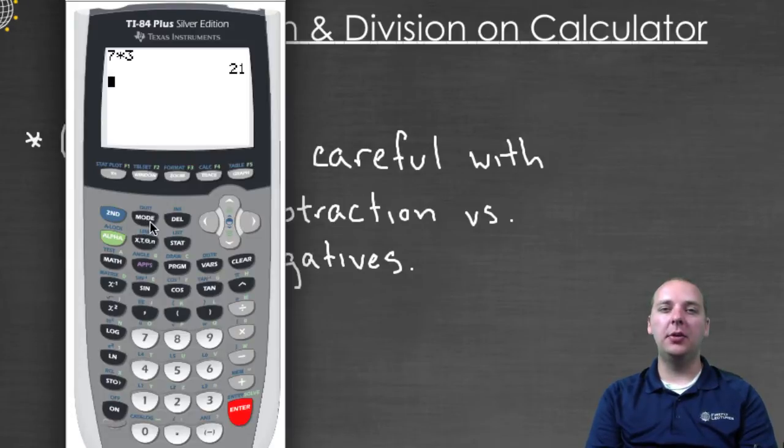Really the only thing I would recommend that you look out for and to be careful for is multiplying or dividing by a negative quantity. There's a minus key and there's a negative key, and you have to make sure to type the correct one.